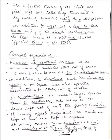Causal organism: The causal organism is Erwinia chrysanthemi pathovar zeae, which is the main cause of bacterial stock rot of maize.